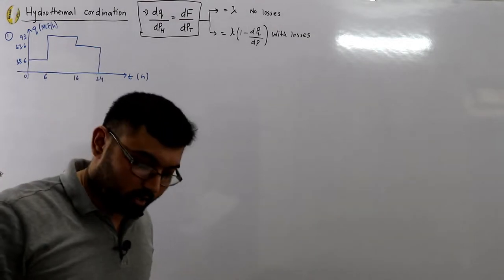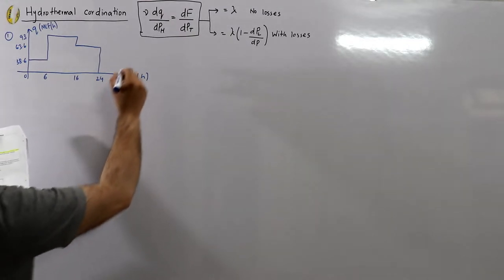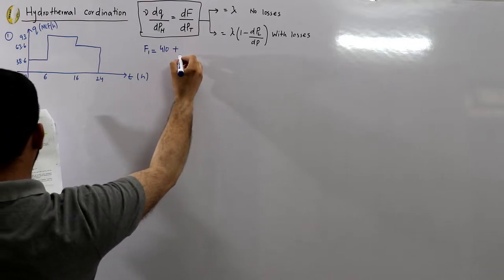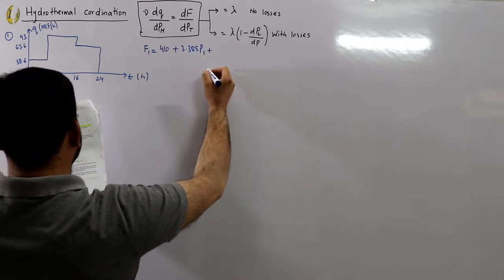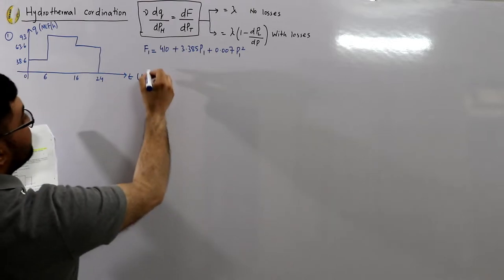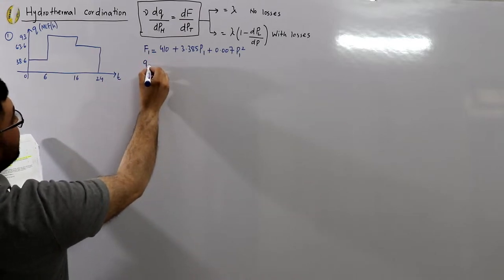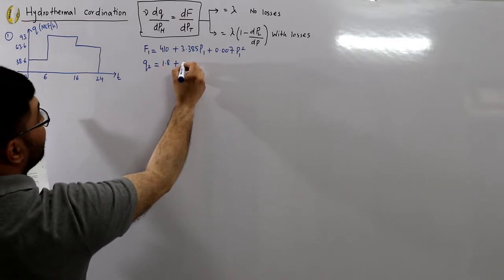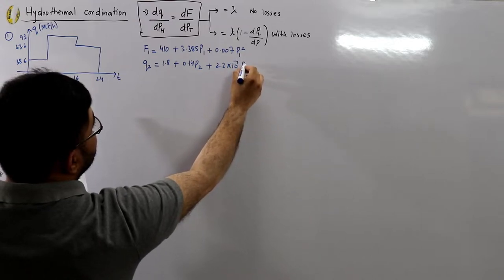We have one thermal plant (Plant 1) with cost function: f1 = 410 + 3.385·P1 + 0.007·P1² (in MBtu per hour). The second unit is a hydro station with discharge equation: q2 = 1.8 + 0.14·P2 + 2.2×10⁻⁴·P2² (in million cubic feet per hour).